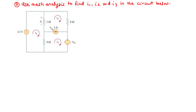So we are going to create a supermesh by eliminating the current source in series with any other element. However, in this particular circuit, this current source is not in series with any other element, so we simply eliminate the 3 amperes current source. Let's redraw the circuit without the 3 amperes current source.